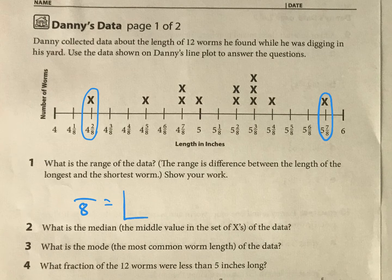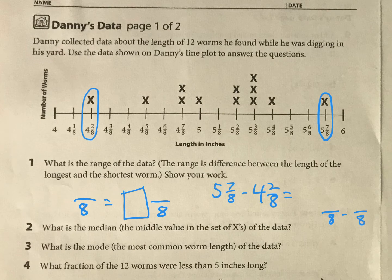And it's going to end up being greater than one, so then you can change it into a mixed number. You can also just use your subtraction, so you could do 5 and 7/8 minus 4 and 2/8, and figure out what is the difference. Or one other option is if you want to change those into improper fractions first, then you can subtract them like that. So there's three different ways you can figure out the range for that one.